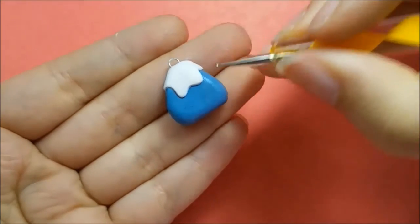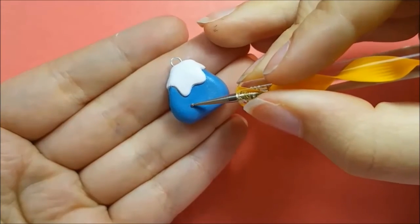Take your dotting tool and create two small indentations where the eyes will go. Roll out your black clay into a long thin snake and cut out two pieces and roll them into balls. These will be for the eyes.